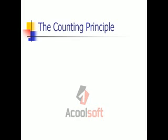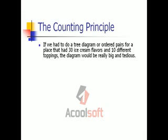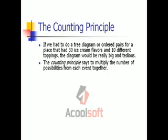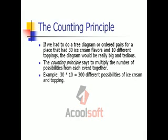Let's talk about the counting principle. If we had to do a tree diagram or ordered pairs for a place that had 30 ice cream flavors and 10 different toppings, that diagram would be huge. That's when we use the counting principle, which tells us to multiply the number of possibilities from each event together. So 30 ice cream flavors times 10 toppings gives us 300 different possibilities of an ice cream and topping combination at that particular store.